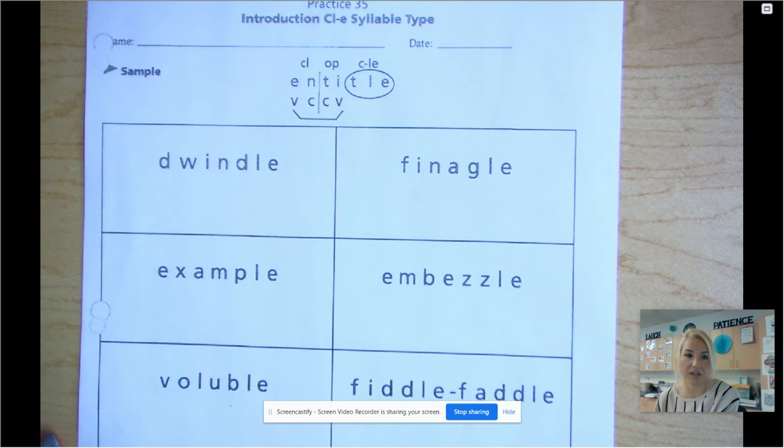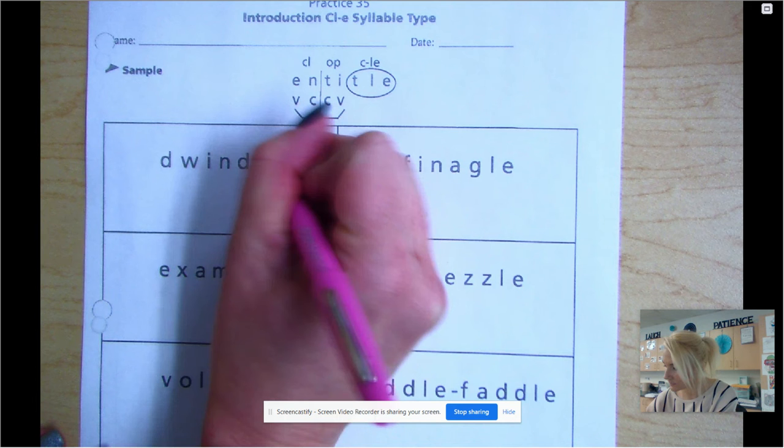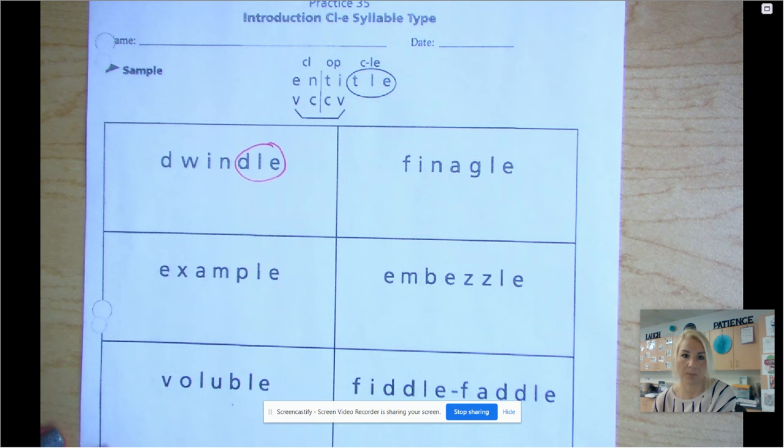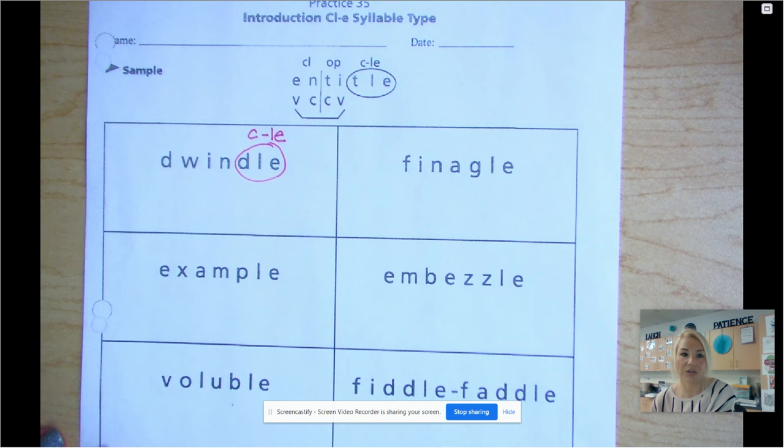So the first thing that you're going to do is you are going to circle your consonant-LE and you're going to label it consonant L-E. And then you're going to go ahead and start like you did before.